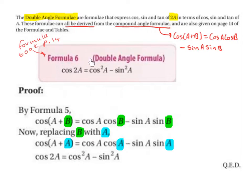So this is formula 6, the double angle formula: cos 2A is equal to cos²A minus sin²A. This is on page 14.